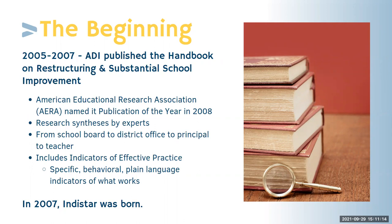We did the research, found the effective practices, and broke them down into small indicators. In Derago Star, we give you the indicators, and we also provide the research and tools so you don't have to search where the information came from or how successful schools implemented these practices. In 2007, we decided to make it an online platform. One important feature was that not only could a school electronically house their information, but there's also that transparency piece.